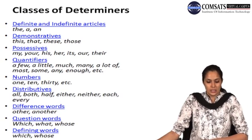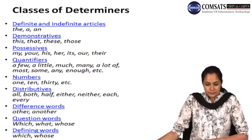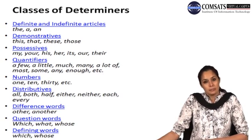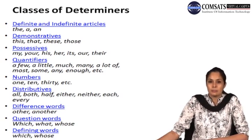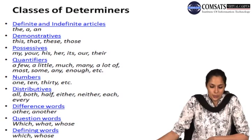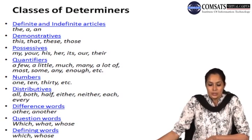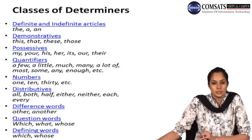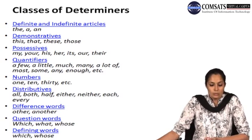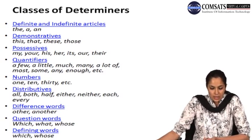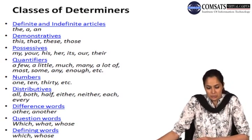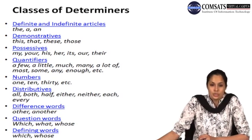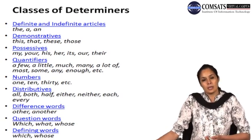Then we have numbers — 1, 10, 30 — these are quantifiers because we have numbers with nouns so that we know the exact quantity: 'one member', '10 tables', '30 people'. Distributives help us give the distributive quantity: 'all', 'both', 'half', 'either', 'neither', 'each', 'every'. Then we have difference words which show comparison: 'other' or 'another'. Question words — 'which', 'what', 'whose', 'why', 'where', 'when' — are defining words. So these are the basic classes of determiners.